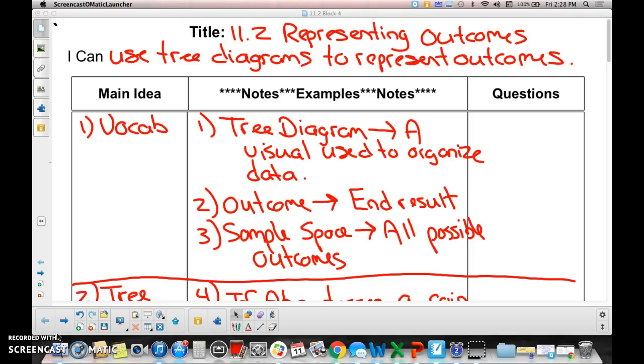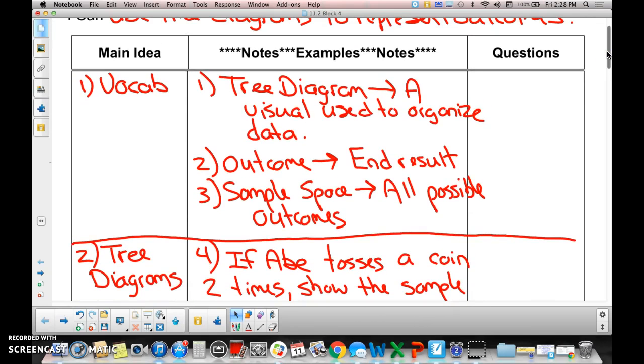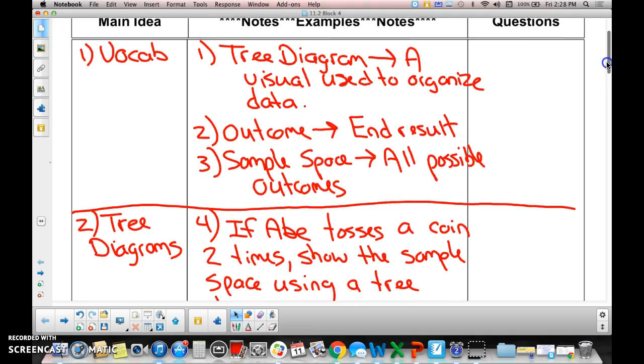Let me point to representing outcomes. I can use tree diagrams to represent outcomes. So we're using tree diagrams to represent outcomes. We know what a tree diagram is, we know an outcome is a result, and a sample space would be all the possible outcomes.